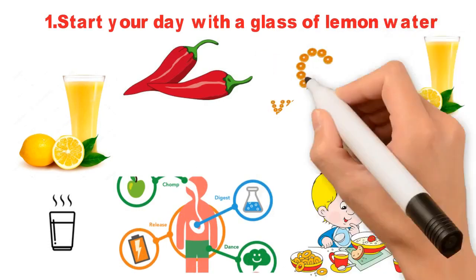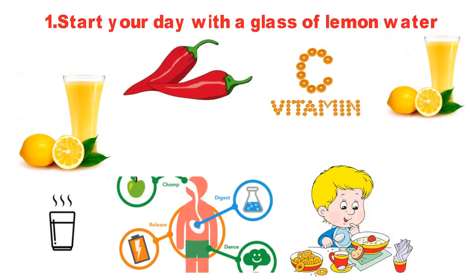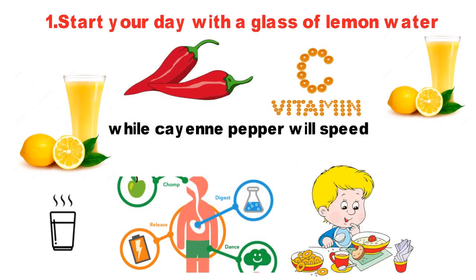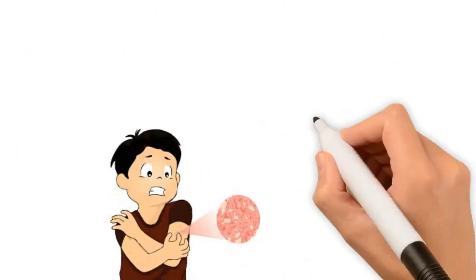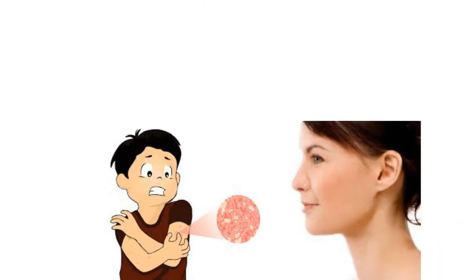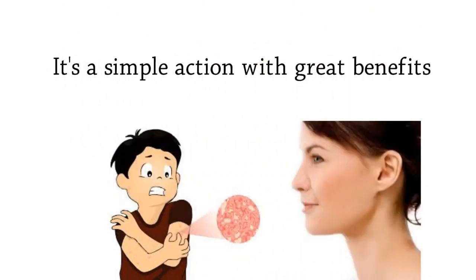Lemon juice contains vitamin C, which will increase your microbicidal immunity, while cayenne pepper will speed up your metabolism. Moreover, your skin condition will improve greatly after some time due to this easy action. It is a simple action with great benefits.